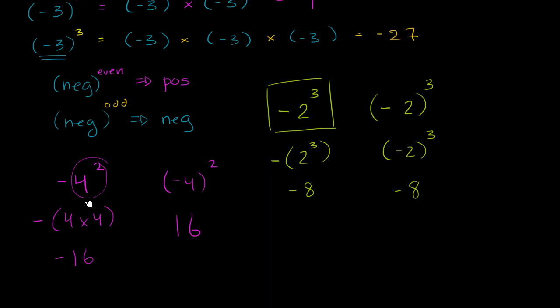So it's really important to think about this properly, and if you want to write the number, if you want the base to be negative 4, put parentheses around it and then write the exponent.